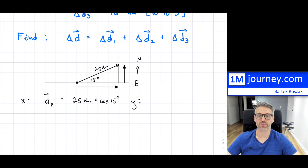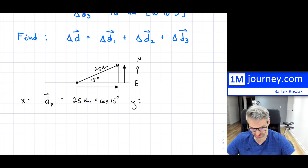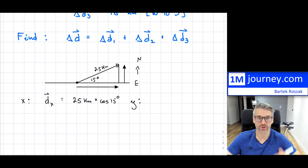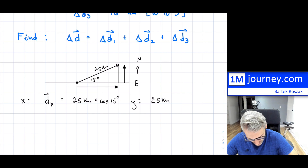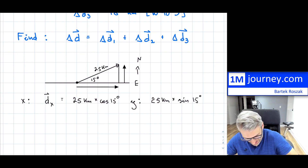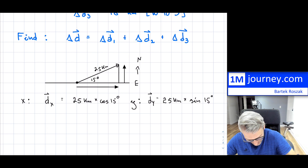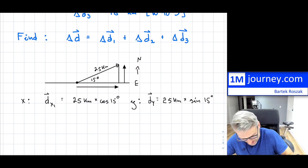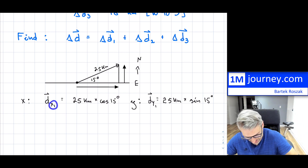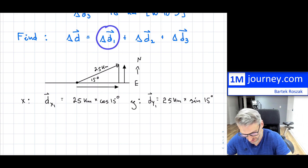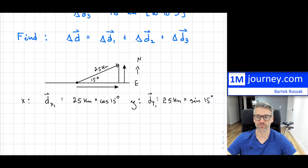The X component is adjacent to the angle, so X₁ = 25 km × cos(15°). The Y component is opposite the angle, so Y₁ = 25 km × sin(15°). So those are the components for the first displacement. You can compute them now or leave them in this form and add everything at the end.